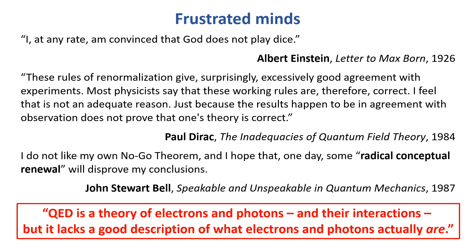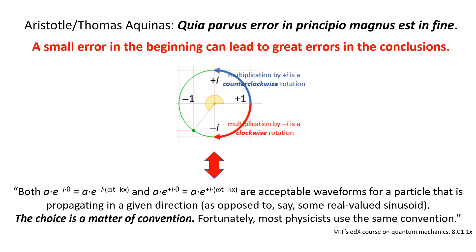When everything is said and done, quantum electrodynamics is a theory of electrons and photons, but it actually lacks a good description of what electrons and photons actually are. The Zitterbewegung interpretation of quantum mechanics gives us an answer to that question. It is the radical conceptual renewal that John Stuart Bell was waiting for. Thomas Aquinas starts his De Ente et Essentia by quoting Aristotle: 'A small error in the beginning can lead to great errors in the conclusion.'